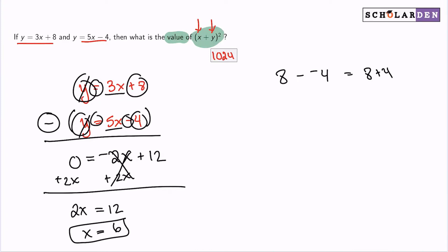Next, we'll plug in the x into either equation, honestly. We can pick either one. I'll just make my life easier, pick this one. So we have y equals 3 multiplied by 6 plus 8. 3 by 6 is 18 plus 8 is 26.